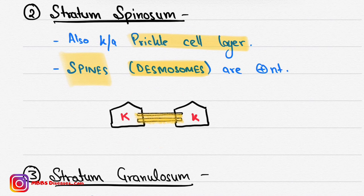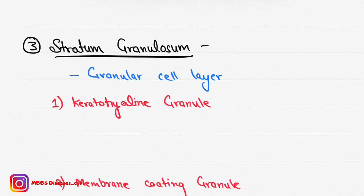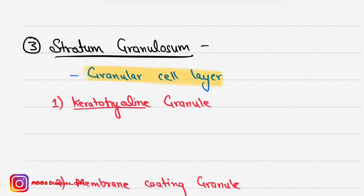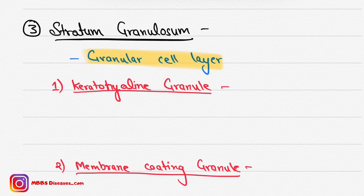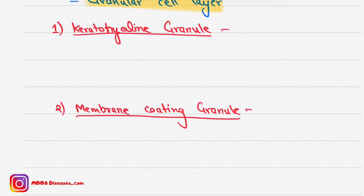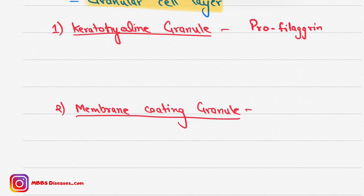The next layer is stratum granulosum — a granular cell layer. It has two types of granules. The first is keratohyaline granules, which contain profilaggrin, a precursor molecule that helps in filament aggregation. A defect in this can lead to ichthyosis vulgaris.